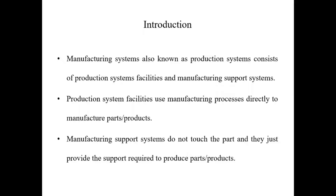The production system facilities physically touch the part to complete it, whereas the manufacturing support systems do not physically touch the part. Their role is simply to provide the support required to the manufacturing of these parts or products, starting from the raw material up to the completion of these parts or products.